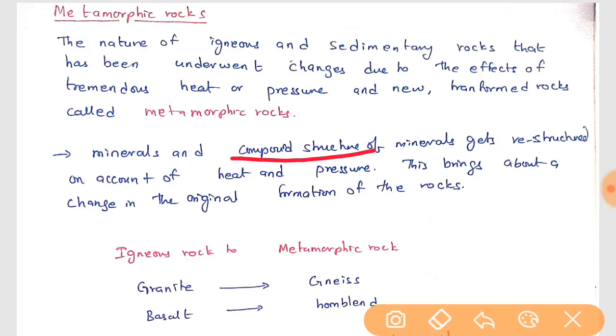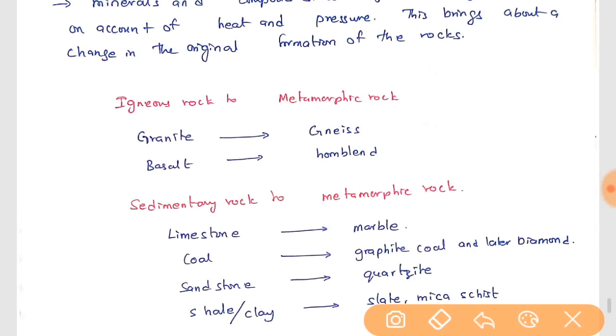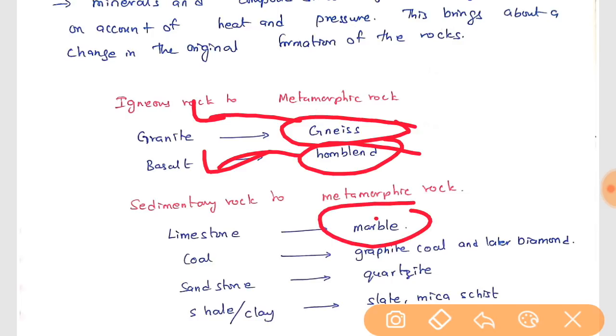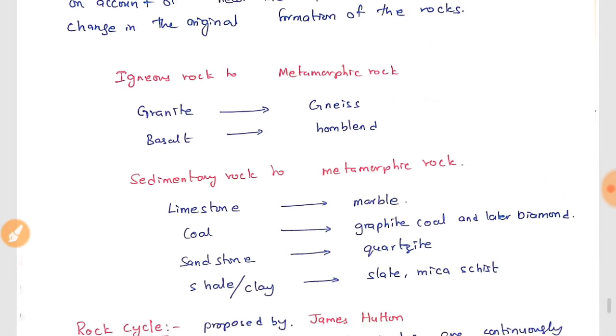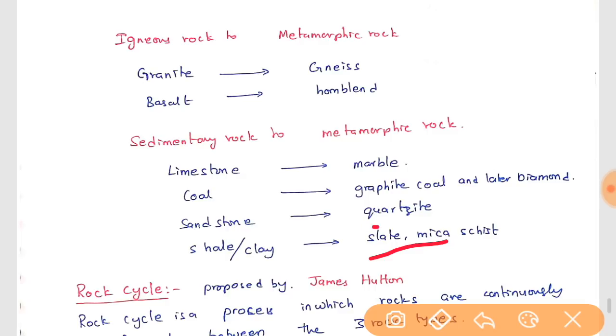After this, it is called metamorphic rocks. What are the metamorphic rocks? Gneiss is formed from granite. Hornblende is formed from basalt. In the same way, marble is formed from the sedimentary rock limestone. Graphite is formed from coal. Diamond is formed from graphite. Quartzite is formed from sandstone, and slate or mica is formed from shale or clay.